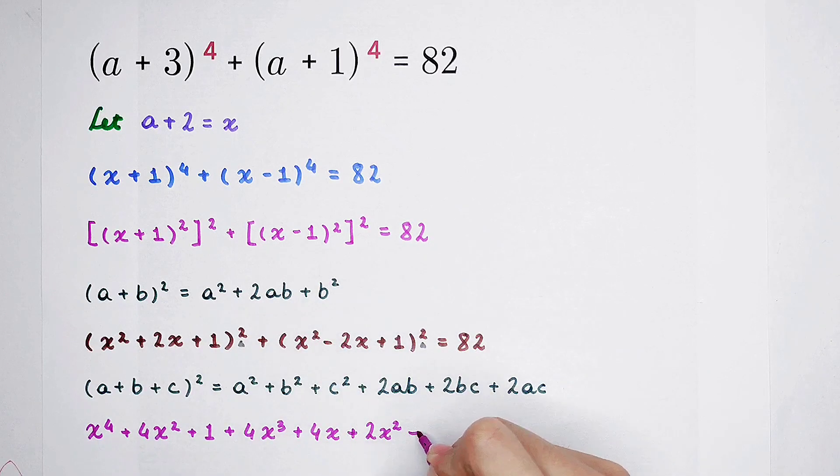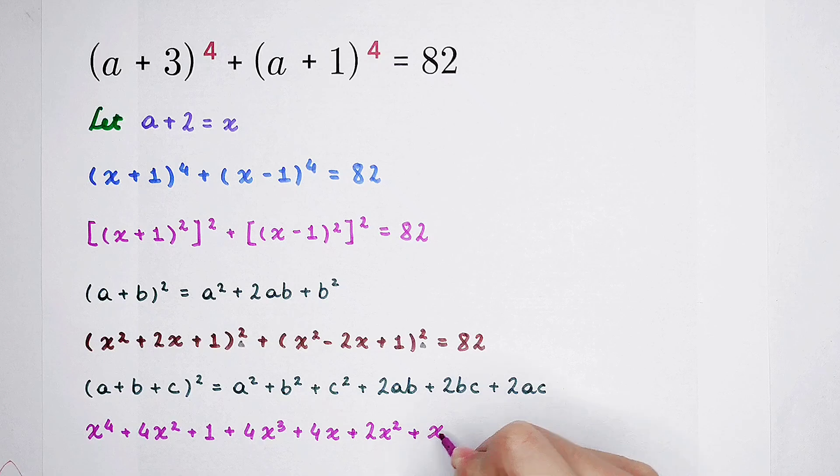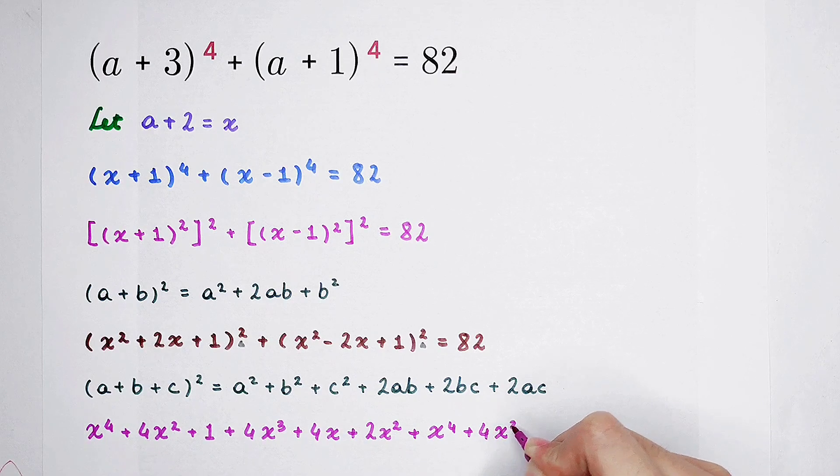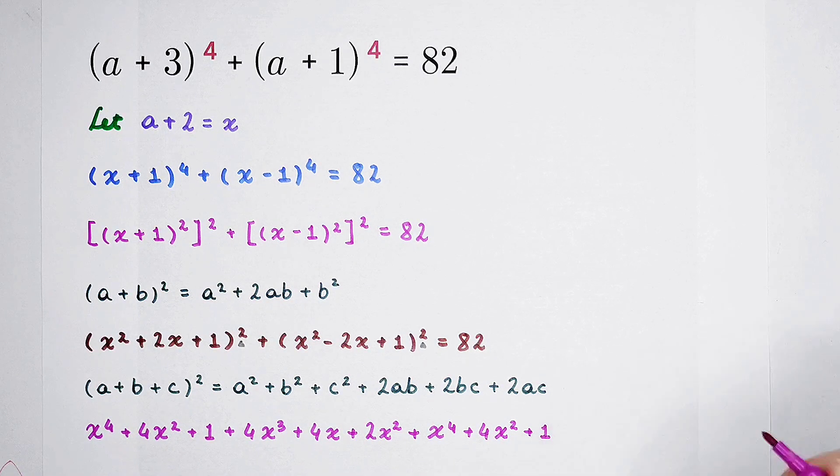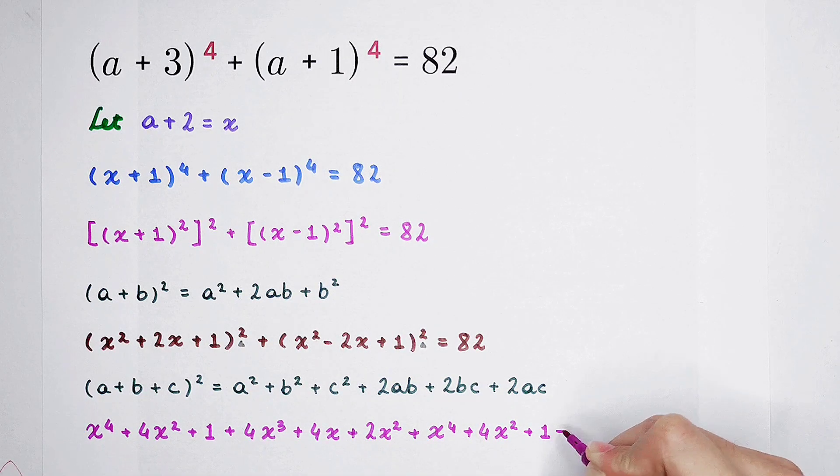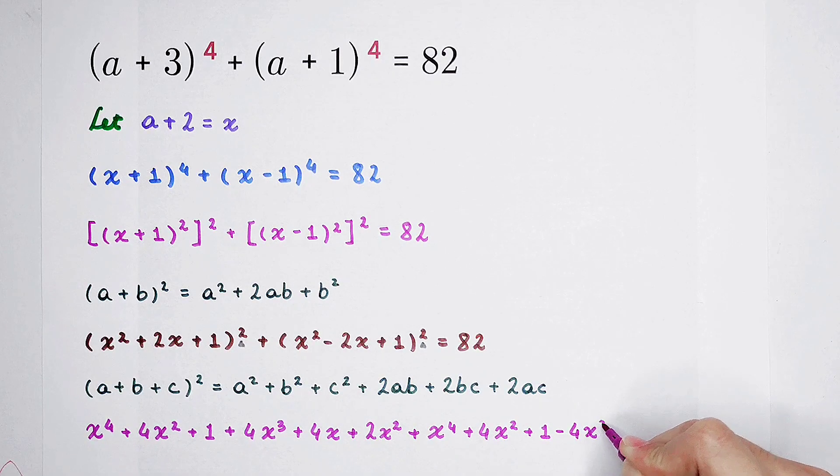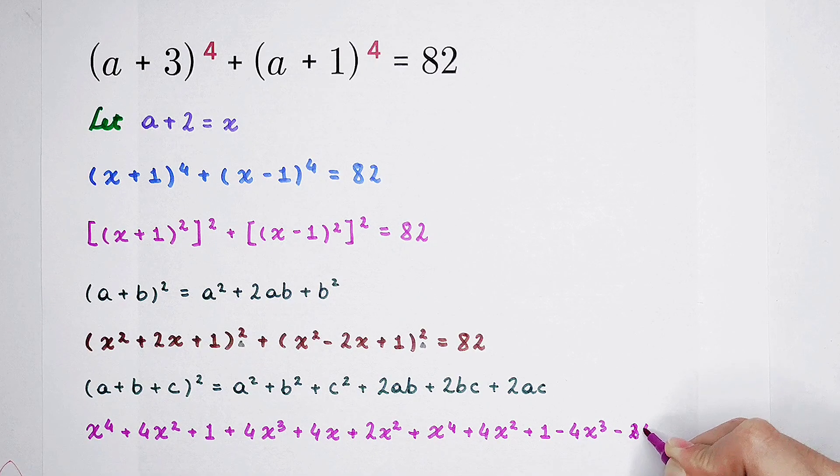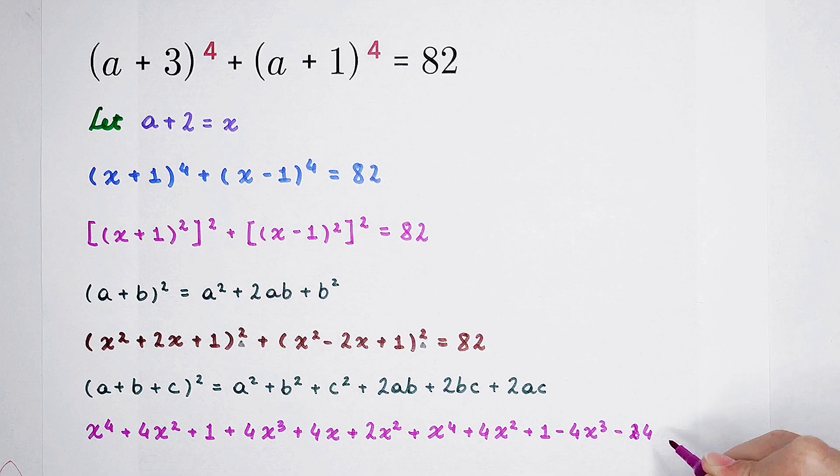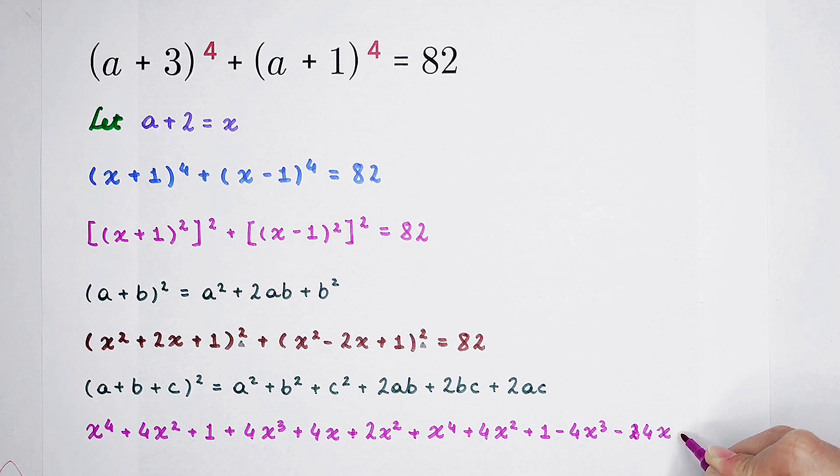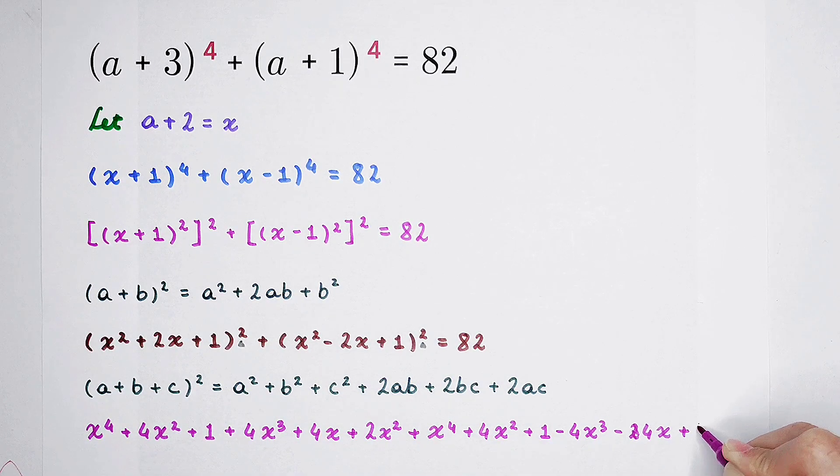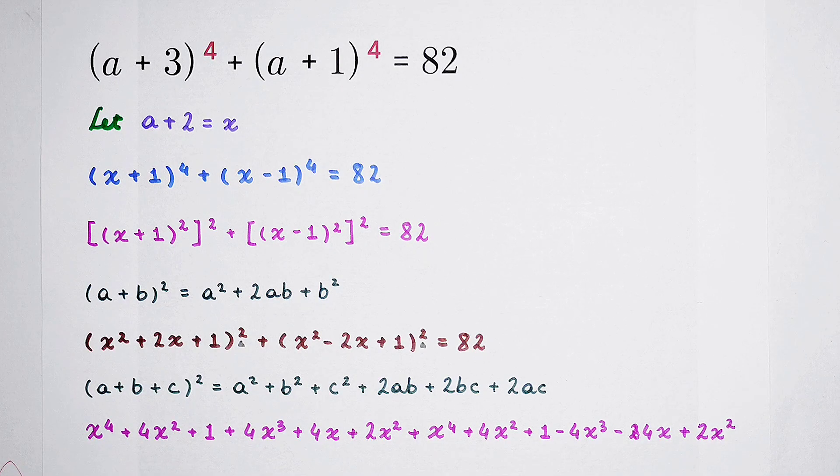And then here, x squared all squared is x to the power 4. And negative 2x all squared is also 4x squared, plus 1. Now 2AB is negative 4x cubed. And 2BC is negative 4 times x. And then plus 2 times AC, that is negative 2x squared. This is the left side.